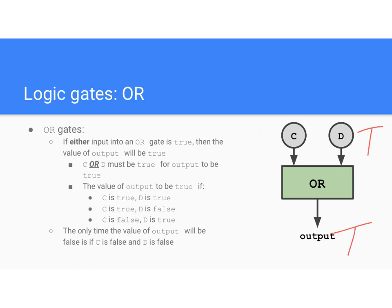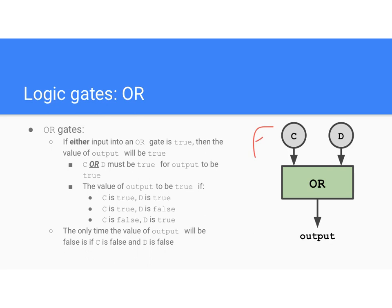Interesting thing with an OR gate: since only C or D had to be true, both of them can be true — the output is still true. The only way to make an OR gate output false is if both C and D are false. That's the only case. Everything I just said is summarized in these notes.